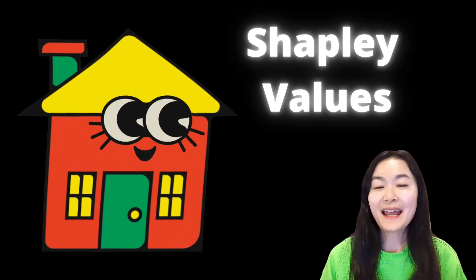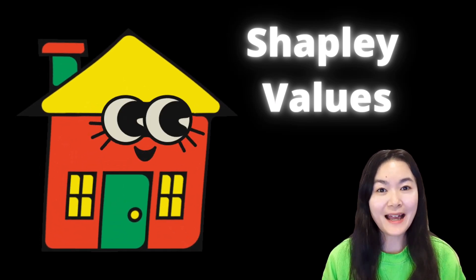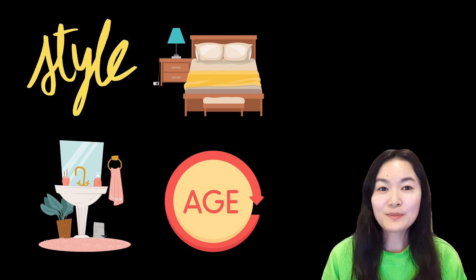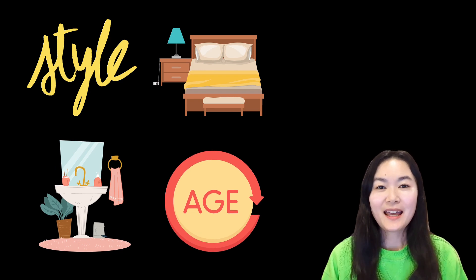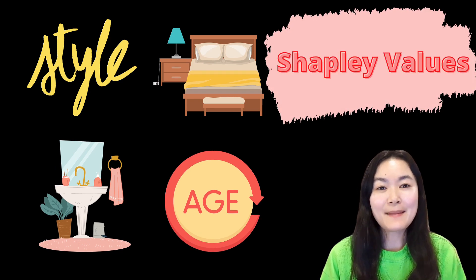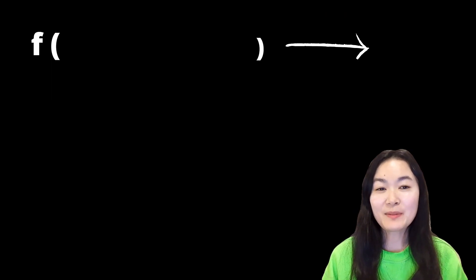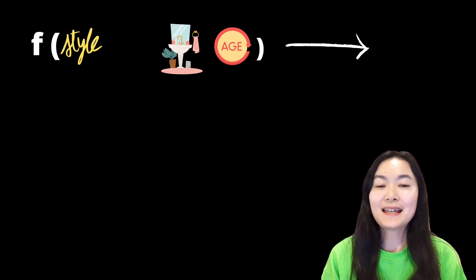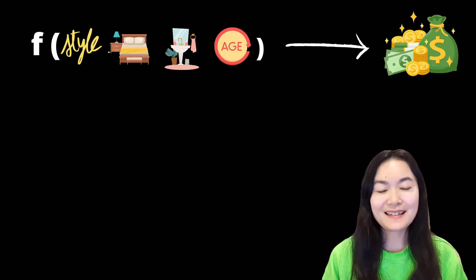We have a model predicting house prices based on several house features like house style, number of bedrooms, number of bathrooms, and house age. How do we calculate the Shapley values for each feature? The setup is that we have a machine learning model F, which inputs a set of house features and outputs house prices.